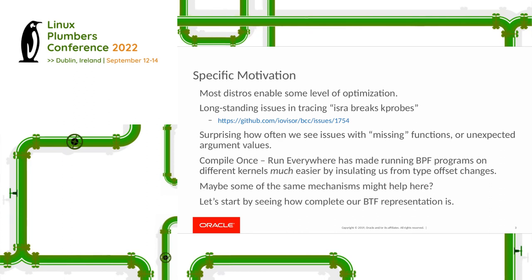The specific motivation of this talk: I work with people who do kernel debugging and observability and they often come to me and say they wanted to trace a kernel function and it wasn't there. That can happen quite frequently, and there are some long-standing issues that have come up in the community — there's a GitHub issue for BCC where a particular form of optimization breaks kprobe observability.